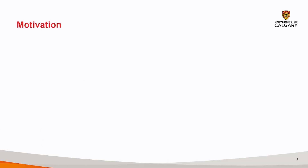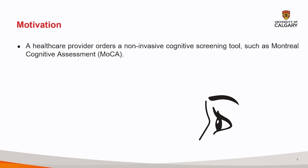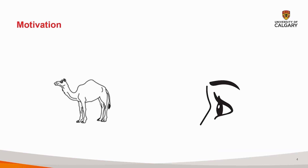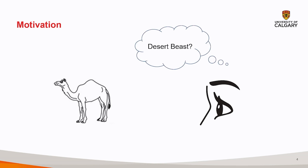I'd like to start with a small motivating scenario. Consider a patient who has recently noticed problems with memory, such as forgetting names, events, or appointments. A healthcare provider may suggest cognitive screening such as a Montreal Cognitive Assessment. Here the patient is asked to name images of three animals shown in front. In the first case the patient can't quite recall the name of the animal; however, the patient manages to explain the context — for example, 'this is a beast that lives in the desert.'